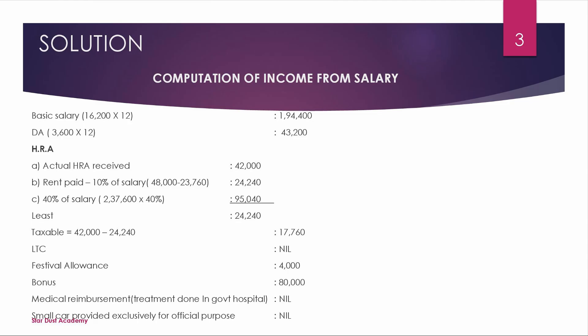Next is HRA. In HRA, the employee is living in a rented house. We need to apply the three conditions: actual HRA received, rent paid minus 10% of salary, and 40% of salary — the least of these is exempt. We will do the working notes. The last exempt amount works out to ₹17,760.